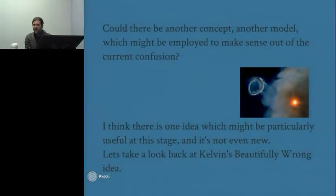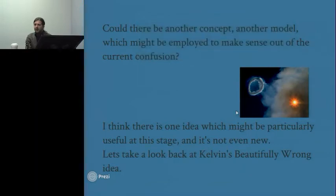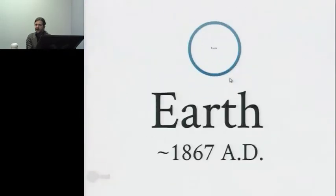I'm arguing that there's some other concept or model which could be used to make sense out of the stuff that we find in physics experiments. I think there's an idea which is not new but has been somewhat overlooked, sometimes called Kelvin's Beautifully Wrong Idea. A smoke ring is a vortex of sorts. You have a high concentration of smoke particles, and that form propagates and persists through time. All matter and light is persisting in form through time. It doesn't, from moment to moment, change what it is.